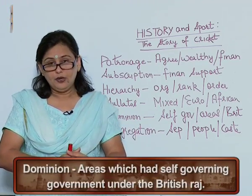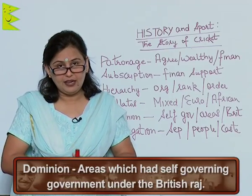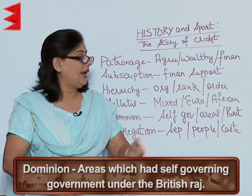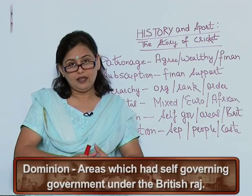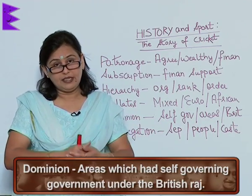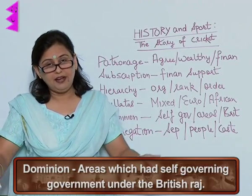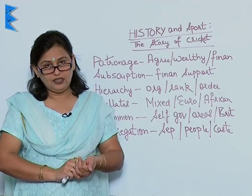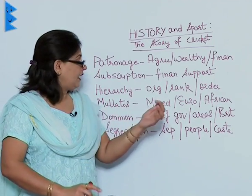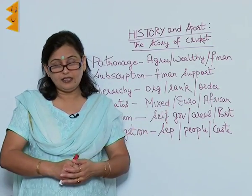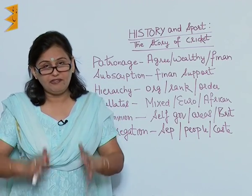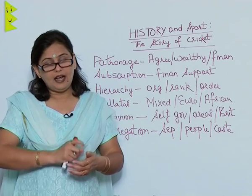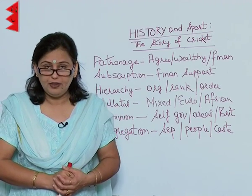Dominion. Dominion status was in fact the areas which actually had self-governing government within the British Raj. If I expand it further, it means that under the Britishers, there were certain areas which were self-governing, that is they were not directly under the control of the British Raj.